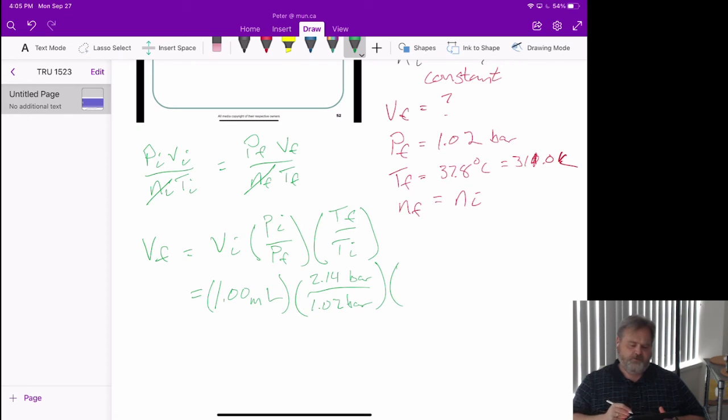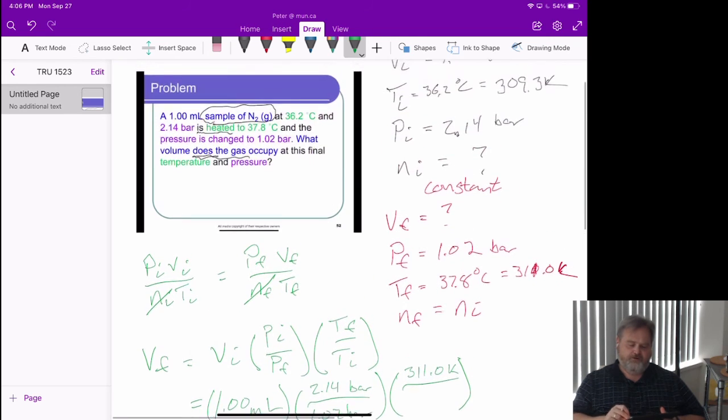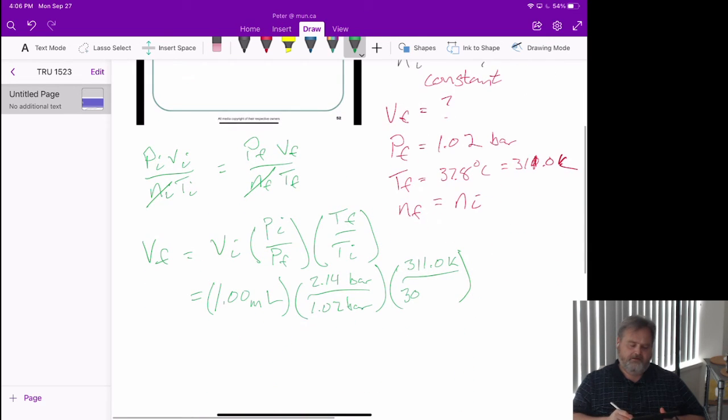But let's get our temperatures in there as well. We've got our final temperature of 311.0 Kelvin, and we're going to divide all this by our initial temperature of 309.3 Kelvin. And what we're going to see is this: we have 1.00 milliliters.